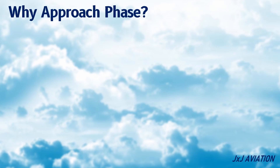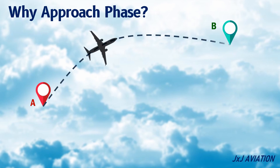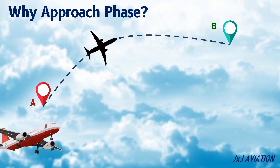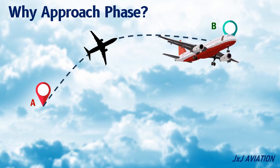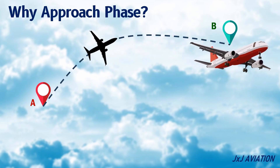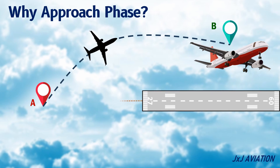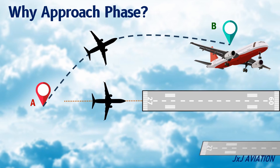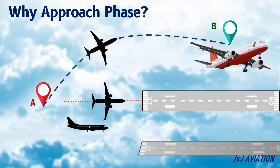Why Approach Phase? Let's consider an aircraft flying from point A to point B. In a normal flight, the aircraft will climb to its cruise altitude after takeoff. From this altitude, the aircraft must descend towards the runway at point B. To ensure a safe and smooth landing on the runway, the aircraft must be aligned with the centerline of the runway, and it has to descend at the correct glide path. This is done by following the correct approach path in the Approach Phase.